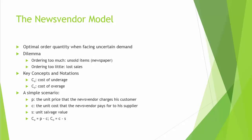We will use the news vendor example to explain key concepts in the model. Suppose you are a news vendor. Every morning, you have to make a decision on how many copies of the newspaper you will order from your supplier. The challenge is that you have to make this decision before the actual demand occurs. The underlying assumption is that you have only one chance to order newspapers. If demand turns out to be more than what you ordered, there will be no second chance to replenish your inventory.